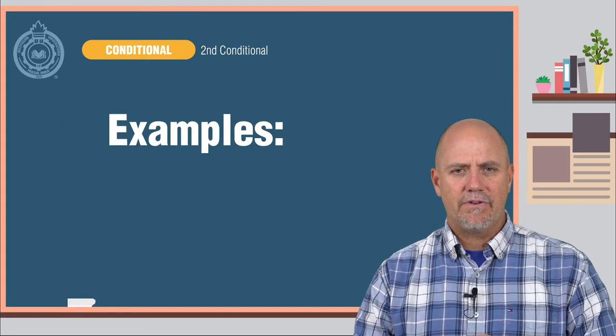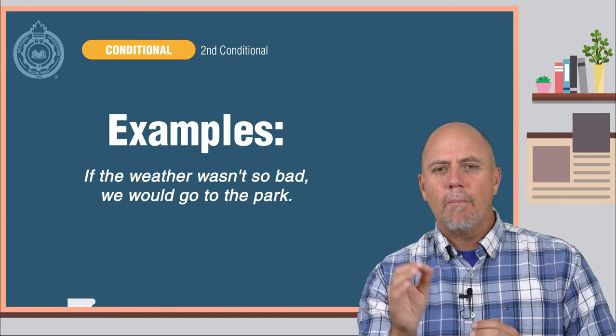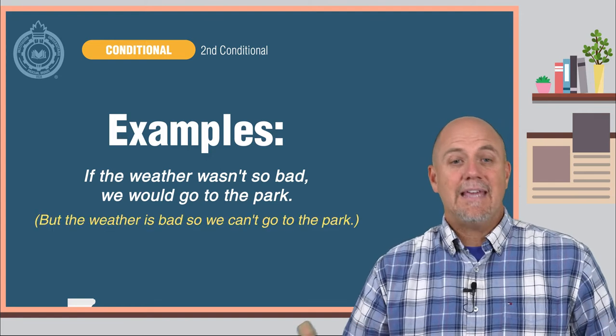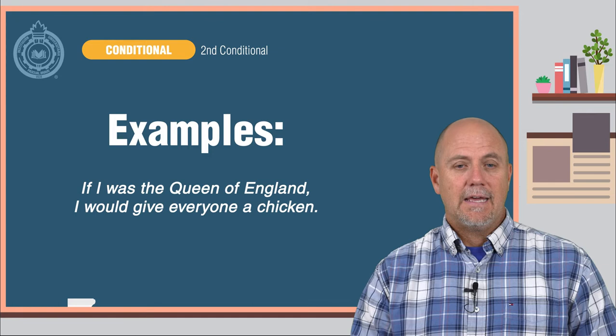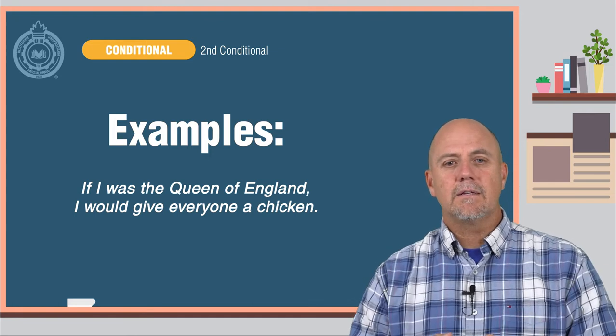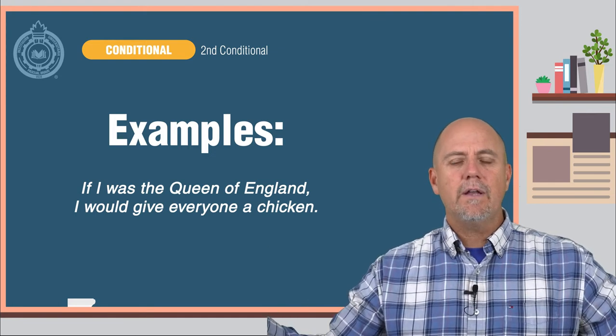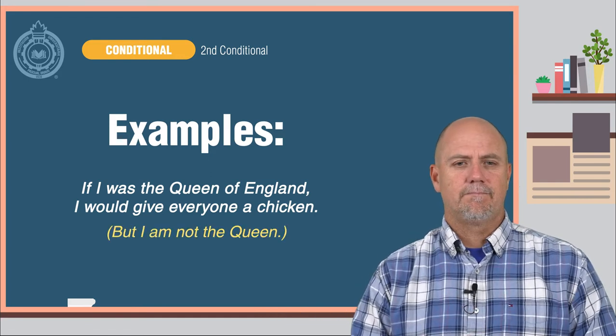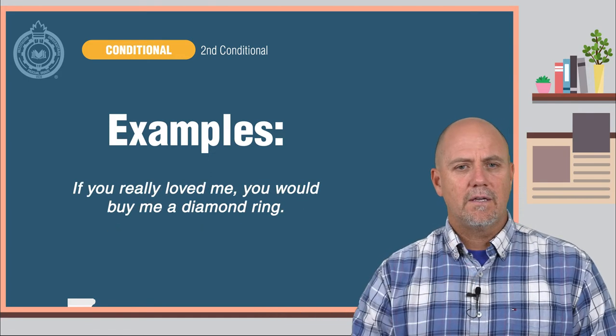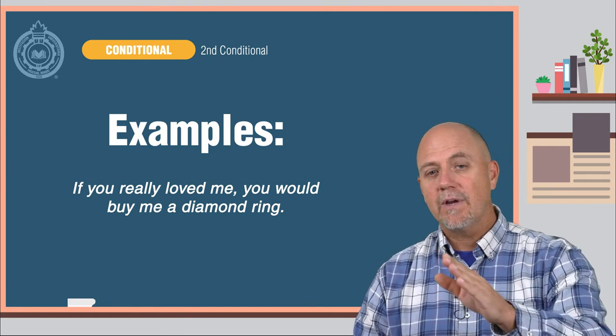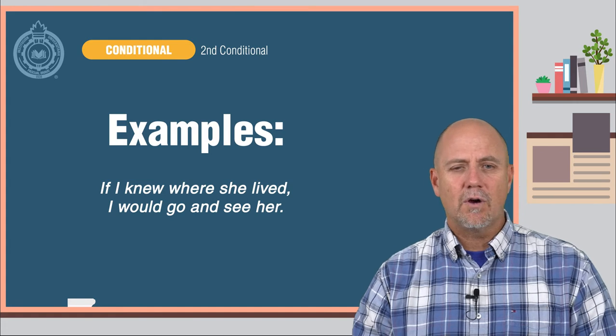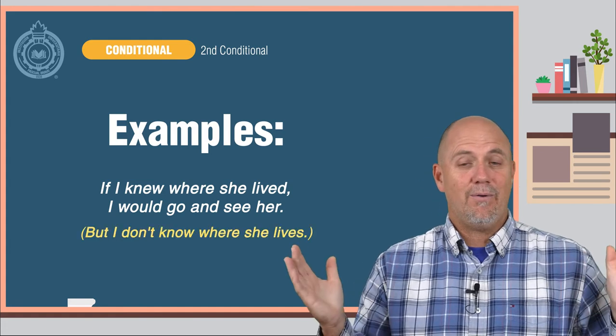Look at these examples. If the weather wasn't so bad, we would go to the park. But the weather is bad, so we can't go to the park. If I was the Queen of England, I would give everyone a chicken. But I'm not the Queen. If you really loved me, you would buy me a diamond ring. If I knew where she lived, I would go and see her. But I don't know where she lives.